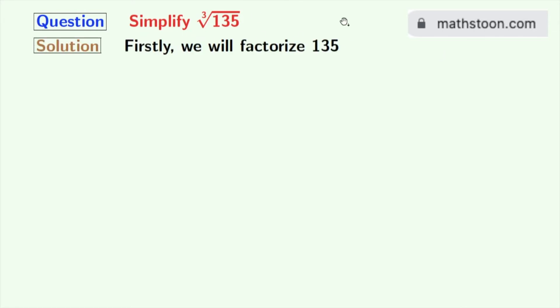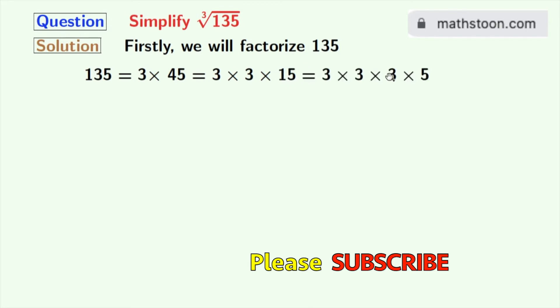At first, we will factorize 135. 135 is divisible by 3, so we get 135 equals 3 times 45. 45 is also divisible by 3, so we get 45 equals 3 times 15. Now 15 is again 3 times 5. So finally, we get 135 equals 3 times 3 times 3 times 5.